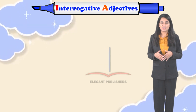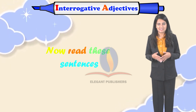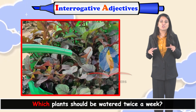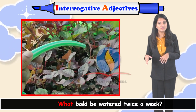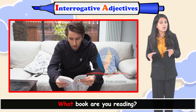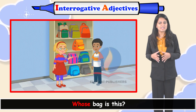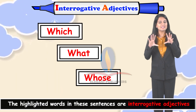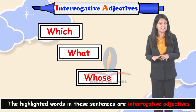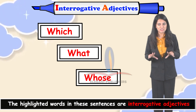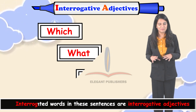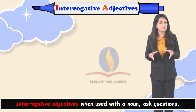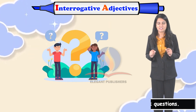Interrogative adjectives. Now read these sentences. Which plants should be watered twice a week? What book are you reading? Whose bag is this? The highlighted words in these sentences are interrogative adjectives. Interrogative adjectives, when used with a noun, ask questions.